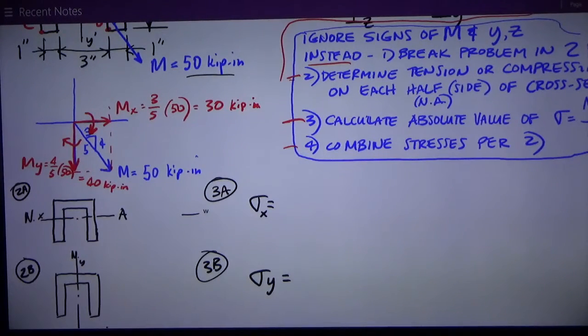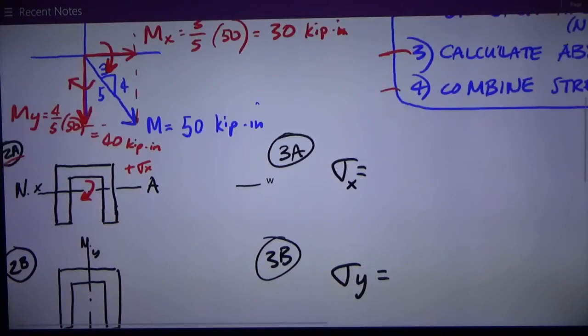Now I want to break this thing into two parts. Part 2a, as I call it, is going to be bending about the x-axis, which is that x-prime neutral axis, horizontal. I've determined above that I have a moment in that direction which is pulling away from the top. So I'm going to have positive sigma x here and negative sigma x on the bottom, compression. That moment is 30 kip-inches.